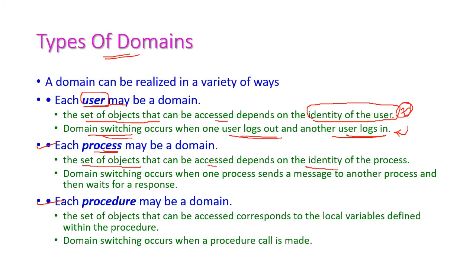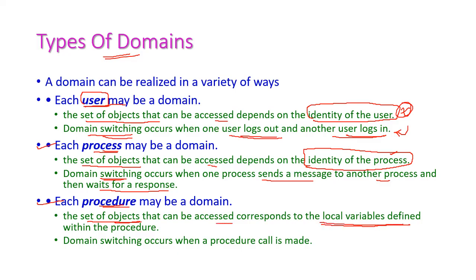In process domain, the set of objects that can be accessed depends on the identity of the process. Domain switching occurs when one process sends a message to another process and waits for a response. In procedure domain, the set of objects that can be accessed corresponds to the local variables defined in that procedure. Domain switching occurs when a procedure call is made.